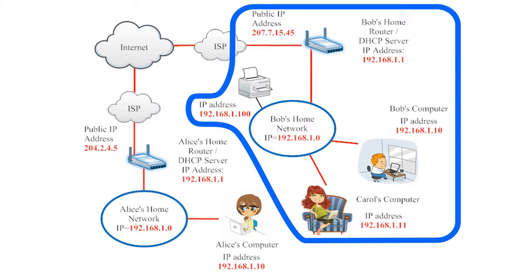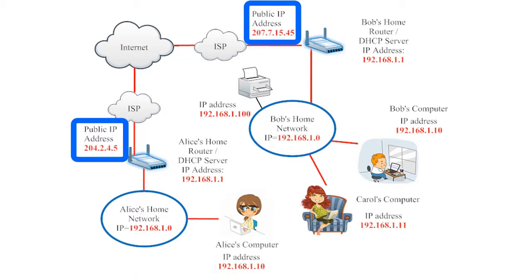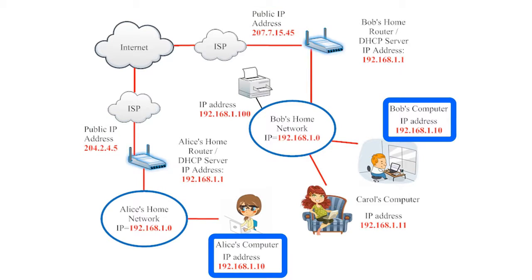Now let's compare Bob's home network to Alice's home network. Both networks have a public IP address, and those public IP addresses are unique — every public IP address must be unique. However, routers help create private networks, and these private networks can reuse the same IP addresses. For example, Alice's computer's private IP address is identical to Bob's computer's private IP address, which is possible because of the distinction between private and public IP addresses.